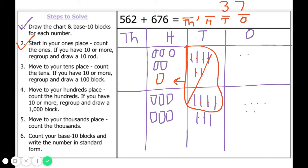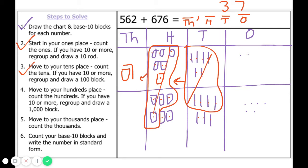Now let's count our hundreds. We count twelve hundreds — again, a number bigger than ten — which means we need to regroup and draw a thousands block. Starting from the top and stopping at ten, we regroup ten hundreds into one thousand. Those hundreds are now gone, and we are left with two hundreds.